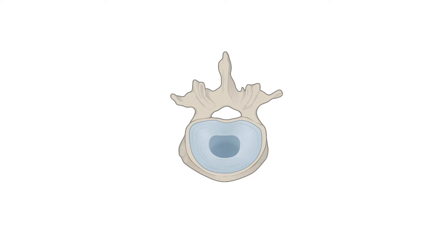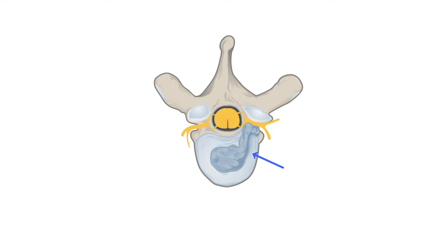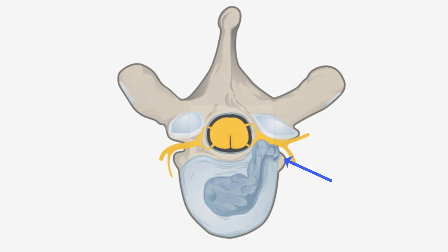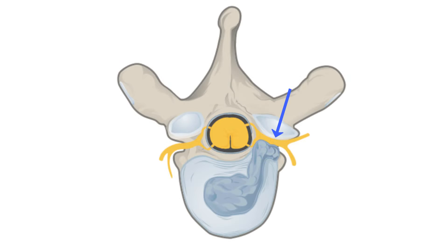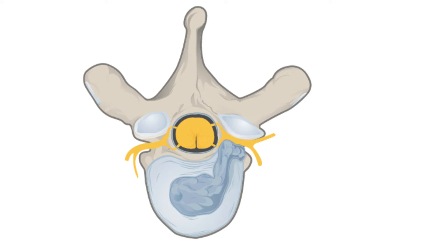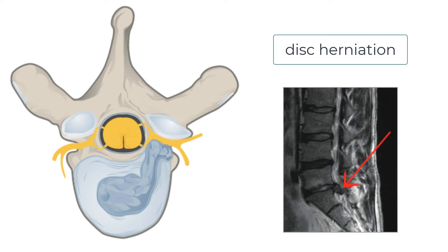Degenerative changes or mechanical trauma can cause tears in the outer annulus fibrosis, squeezing out the nucleus pulposus, which can then exert direct pressure on the spinal cord itself, or more commonly on the nerve roots as they leave the spinal cord. This is known as a disc herniation, and I'll do a more detailed tutorial on the clinical anatomy of this topic separately.